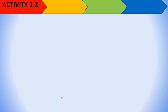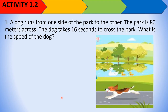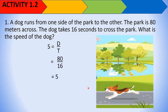Activity 1.2, Number 1: A dog runs from one side of the park to the other. The park is 80 meters across and the dog takes 16 seconds to cross. What is the speed of the dog? Speed = D/T = 80/16 = 5. The unit is meters per second. The speed of the dog is 5 meters per second.